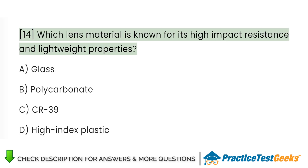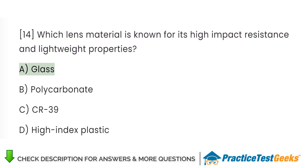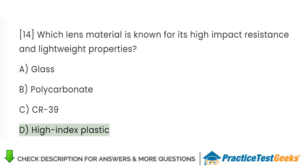Which lens material is known for its high-impact resistance and lightweight properties? A. Glass. B. Polycarbonate. C. CR39. D. High-index plastic.